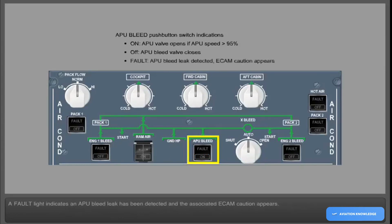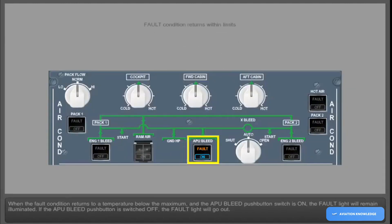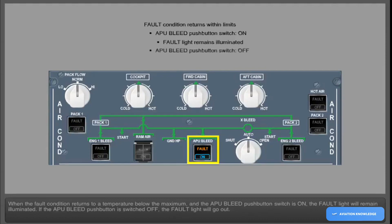A fault light indicates an APU bleed leak has been detected and the associated ECAM caution appears. When the fault condition returns to a temperature below the maximum and the APU bleed push-button switch is on, the fault light will remain illuminated. If the APU bleed push-button is switched off, the fault light will go out.